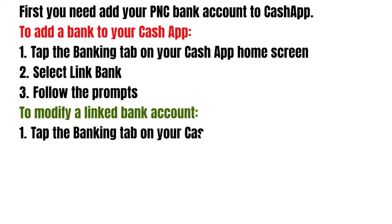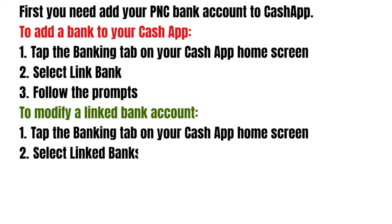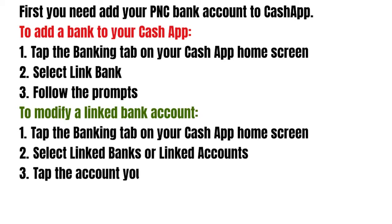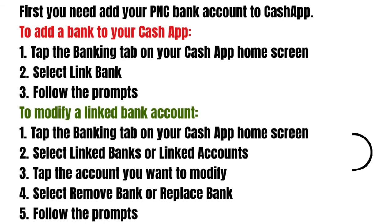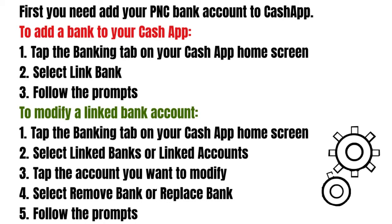To modify a linked bank account, tap on the Banking tab on your Cash App home screen, then select Linked Banks or Linked Accounts and tap the account you want to modify. Then select Remove Bank or Replace Bank and follow the prompts.